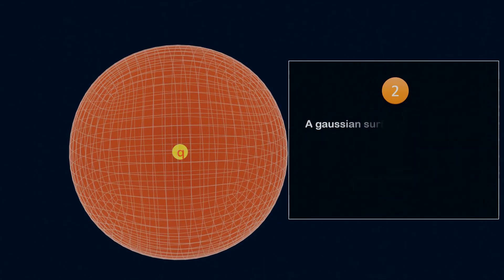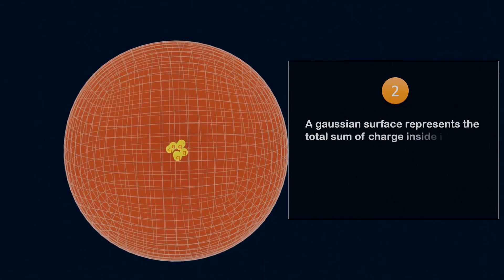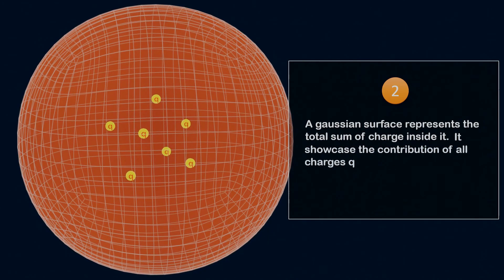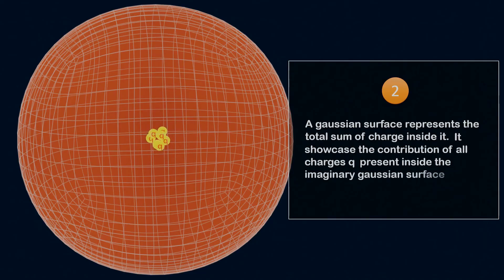Second, a Gaussian surface represents the total sum of charge inside it. It showcases the contribution of all charges Q present inside the imaginary Gaussian surface.